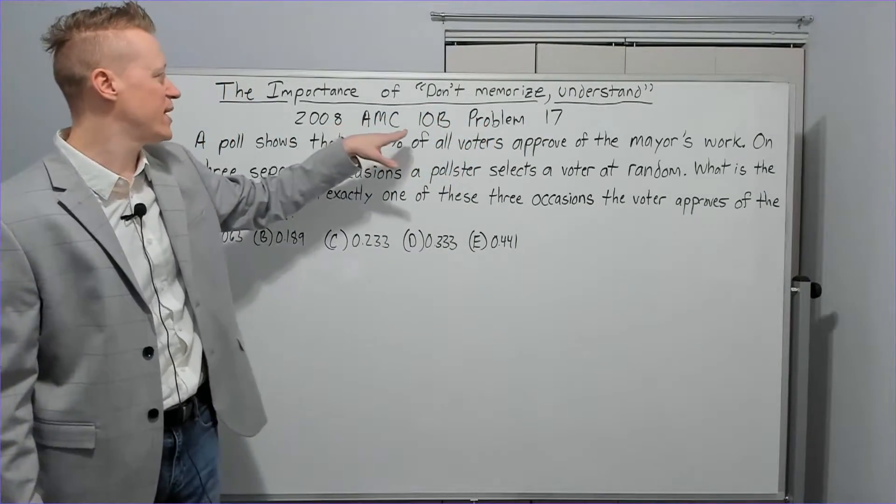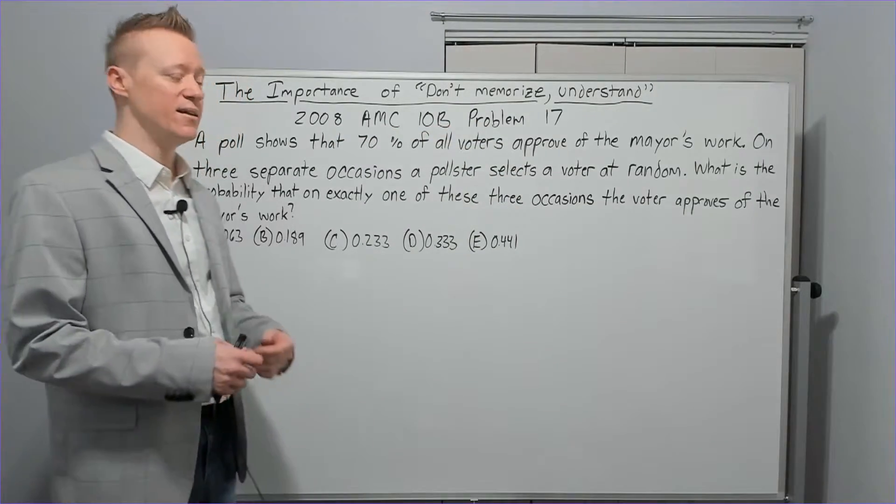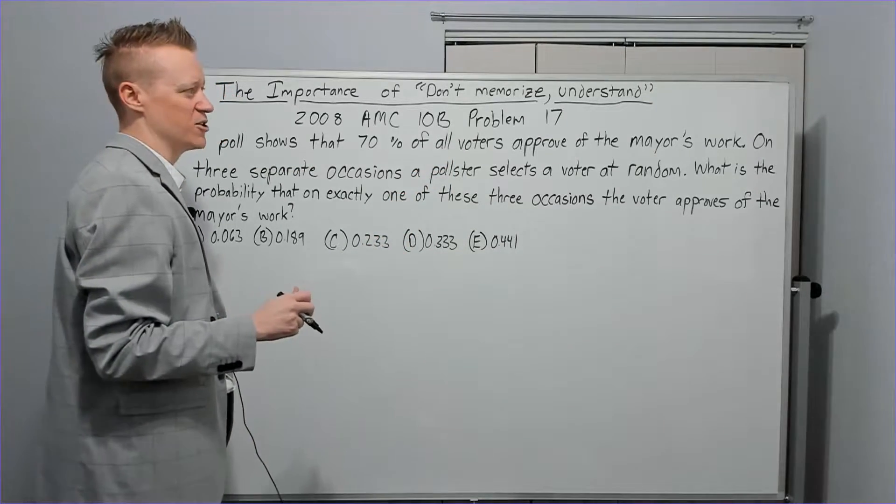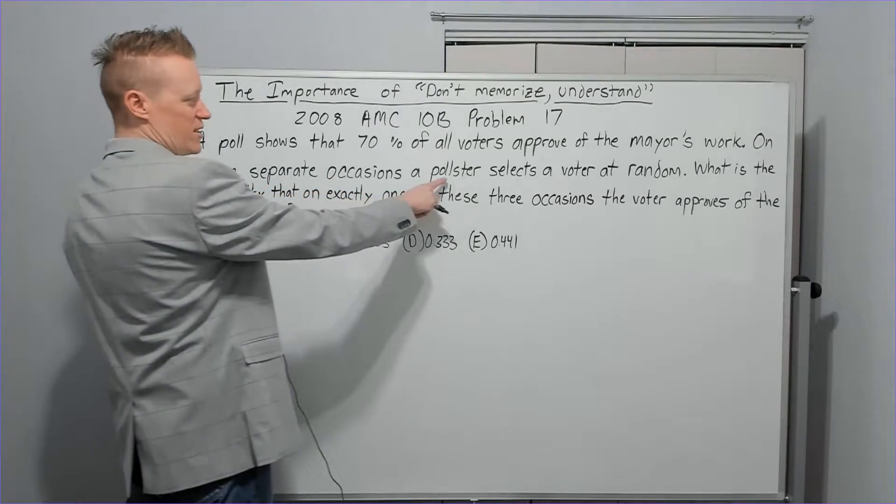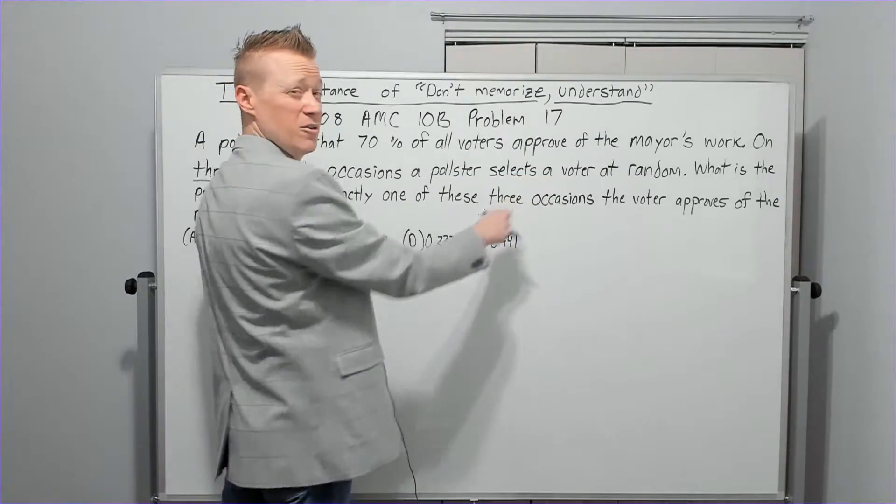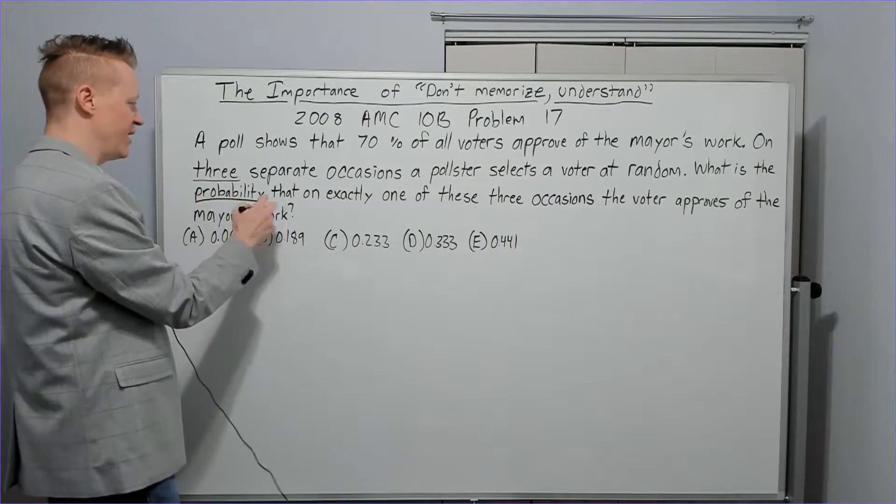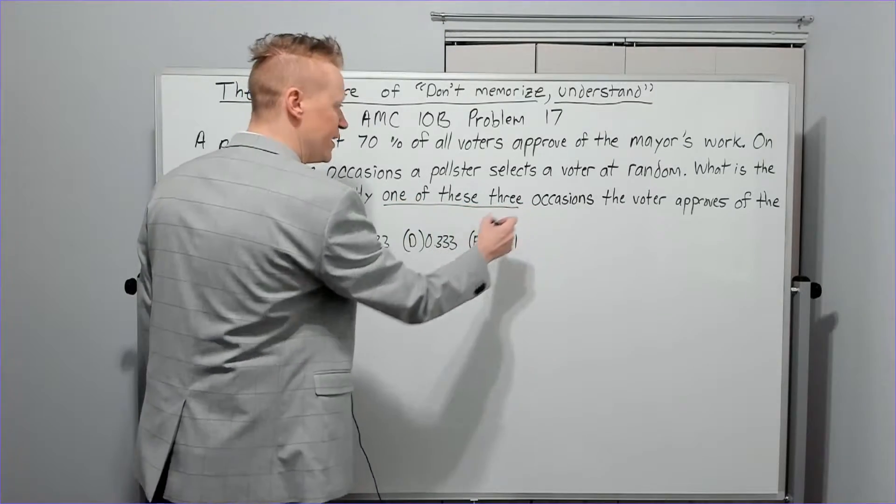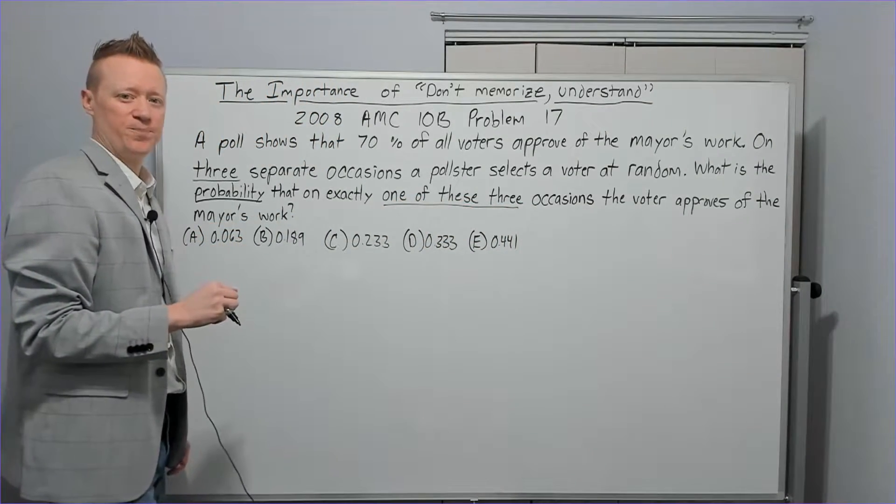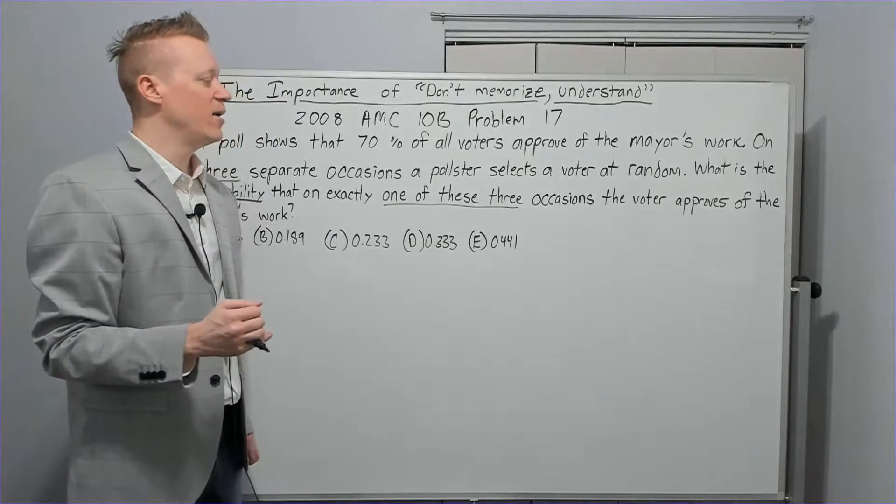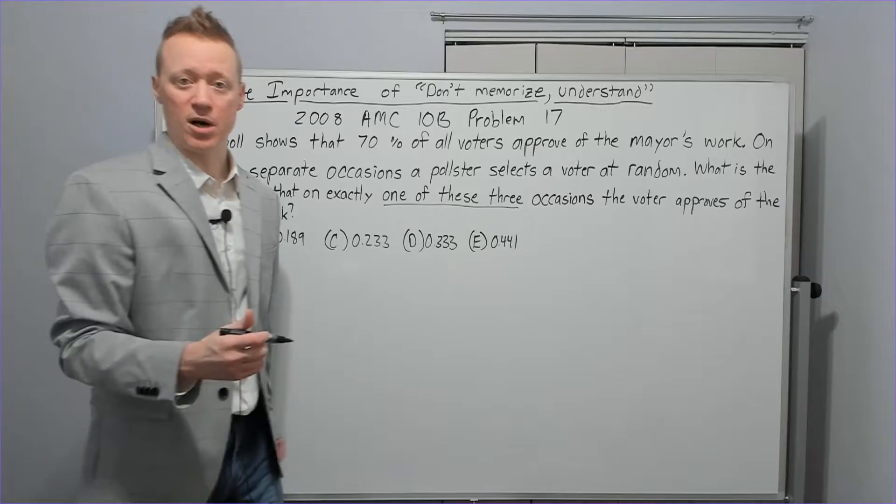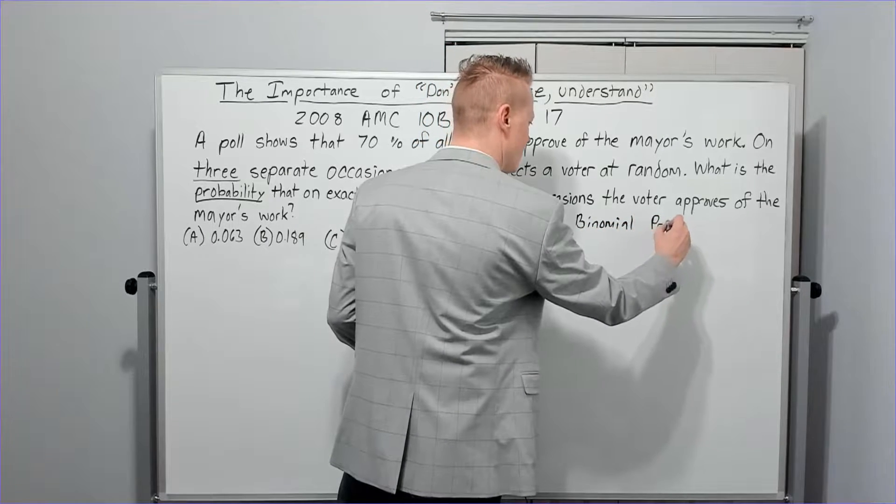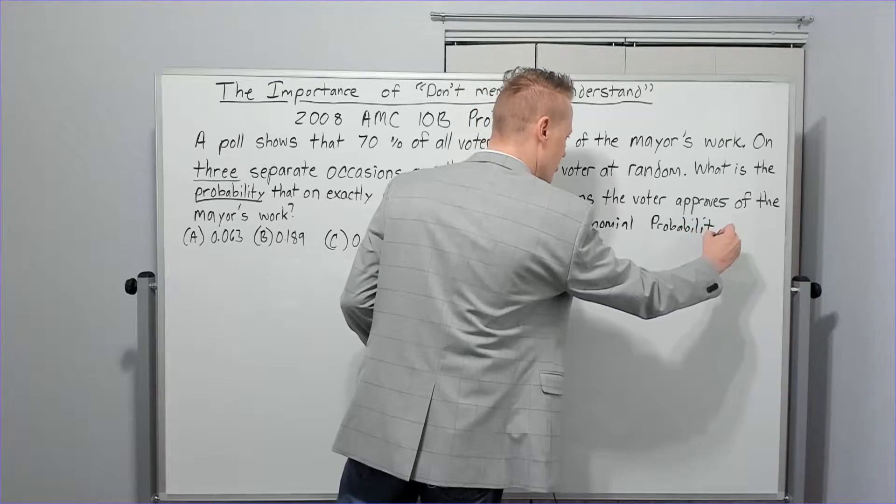We're going to use the basis of this as the 2008 AMC 10B problem number 17. A poll shows that 70% of all voters approve of the mayor's work. On three separate occasions, a pollster selects a voter at random. What is the probability that on exactly one of these three occasions, the voter approves of the mayor's work? And if you know what we're going to use here, as some of you do, some of you might not, what we're going to be using is called binomial probability. I'll write that here. Binomial, meaning there's going to be two outcomes.